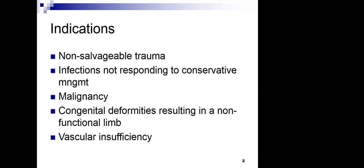In cases of traumatic amputation during a road traffic accident or industrial accident, if the amputated part could not be saved or brought back in a reattachable state, that is non-salvageable trauma. If the part is brought back in adequate time, it can often be reattached using microsurgical procedures. If reattachment is not possible, or the part is crushed beyond repair, that is one indication for amputation.